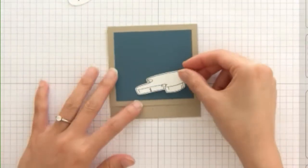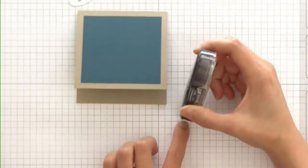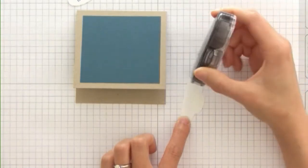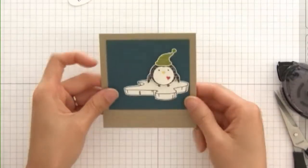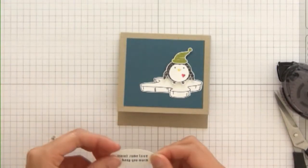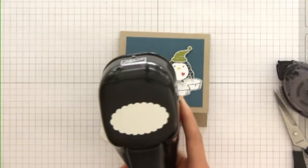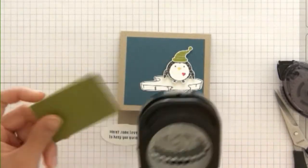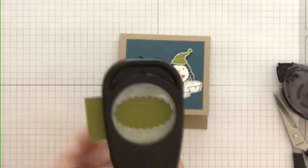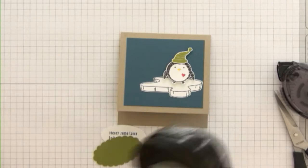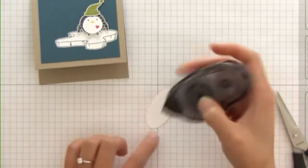Now I'm going to start adhering my elements to the teabag holder on the front and put some adhesive on all of the pieces. I'm going to take my scallop oval punch and punch a piece of Old Olive cardstock and adhere my sentiment down on that.